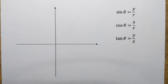Hi everyone. In this video we're going to talk about signs, meaning positive or negative, that trigonometric function values take depending on angles and in which quadrants those angles terminate.